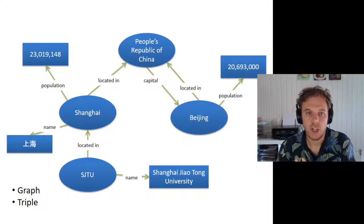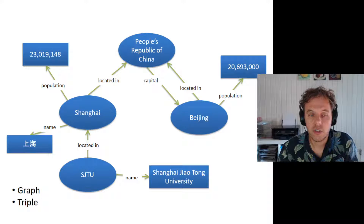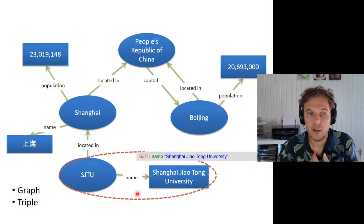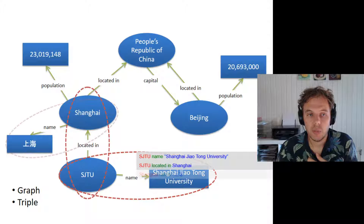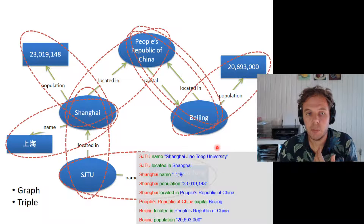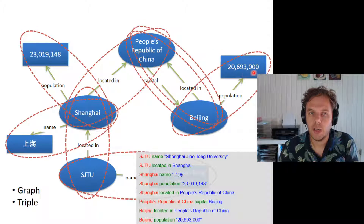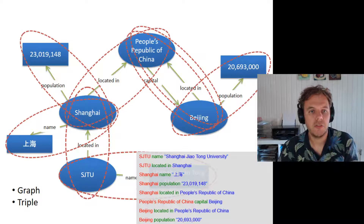Looking at some triples: this is a little knowledge graph. We see a triple here — Shanghai, population, and then some value — or Shanghai, located in, the People's Republic of China. There are triples going all kinds of directions. This mini graph consists of eight different triples, listed here. In green you can see the predicates, which correspond to the arrows. In blue you see the objects, which sometimes are resources and sometimes are values — denoted by squares and ellipses respectively. Values have quotes around them — that's how we differentiate between them.